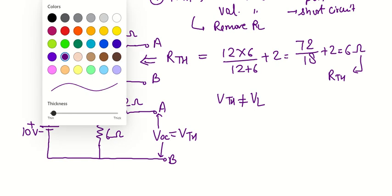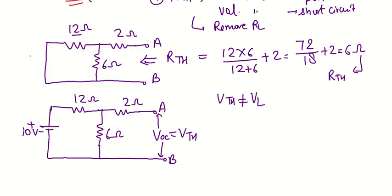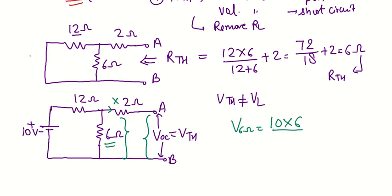To find the drop across terminal A and B, the 6 ohm resistance is in parallel with those terminals, so the drop across 6 ohm equals the drop across A and B. The 2 ohm resistance is open-circuited so no current flows through that path. Using the voltage division rule: VTH = 10 × 6 / (12 + 6) = 10/3 volts.